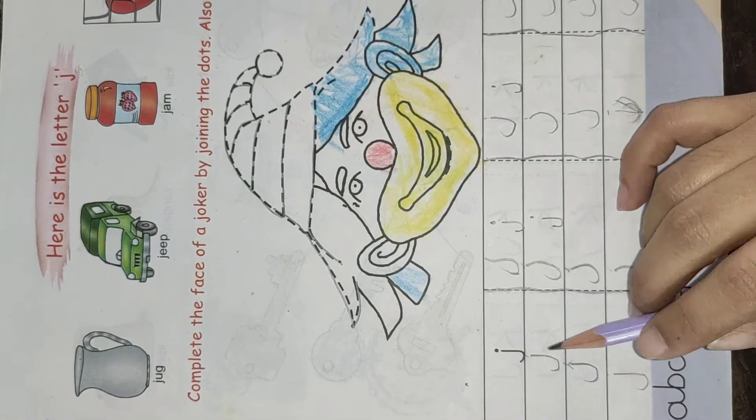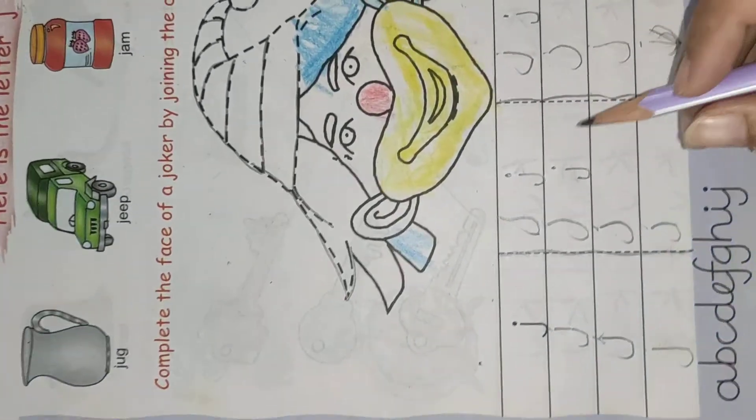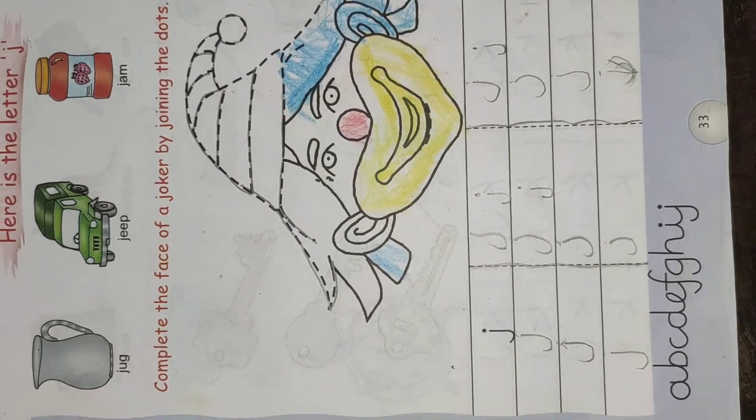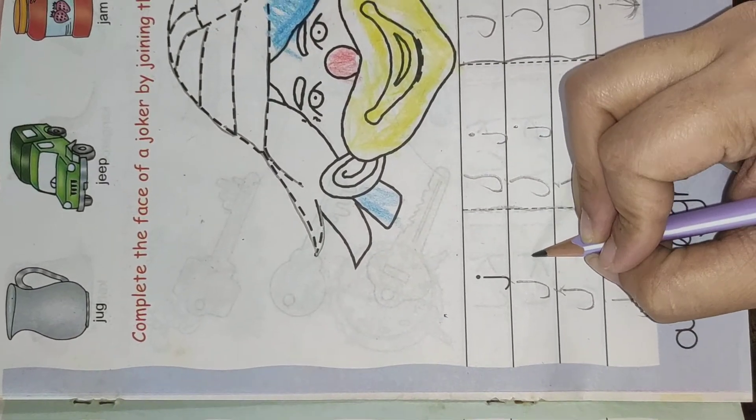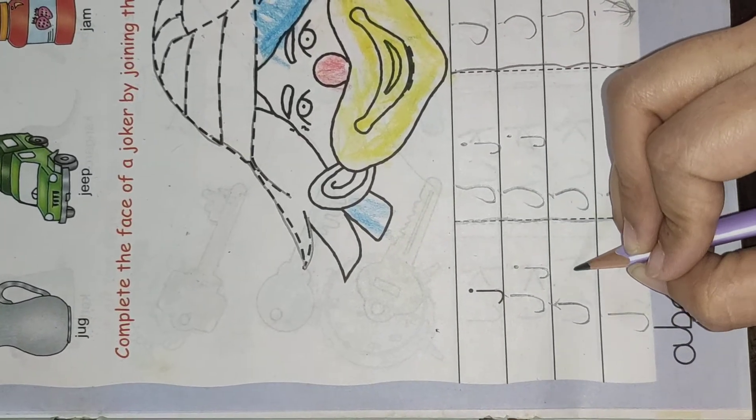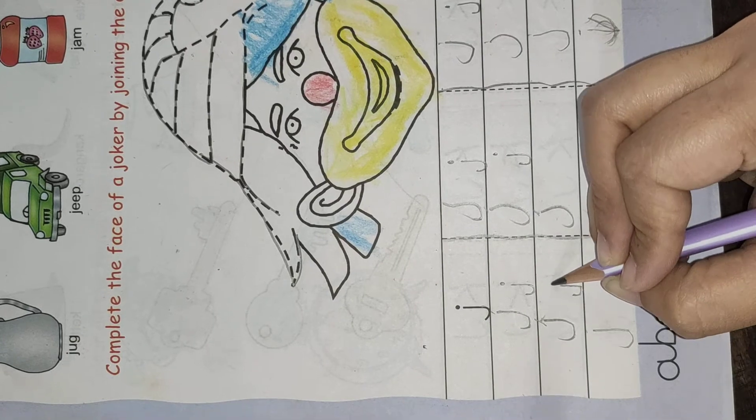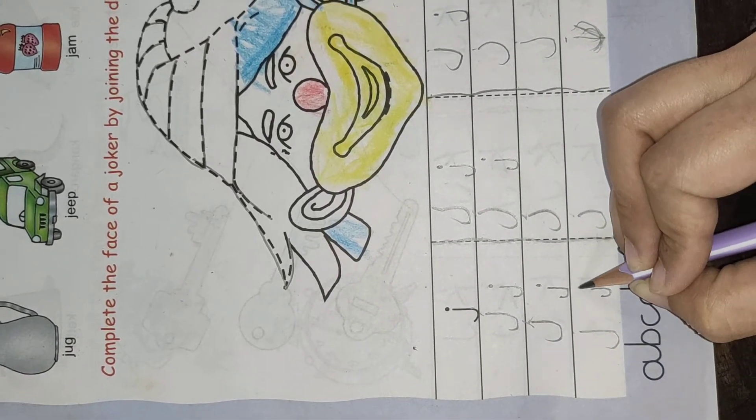And now children, see here, what is this? This is letter J. So now we have here letter J. See, which way we are going to write letter J? One standing line, curve, dot. One standing line, curve, dot. One standing line, curve, dot.